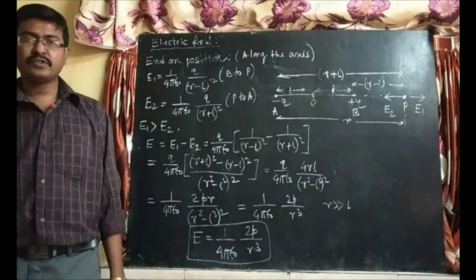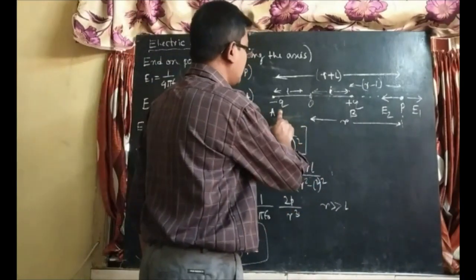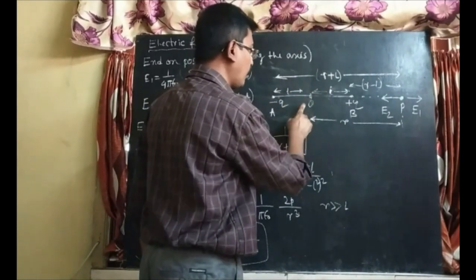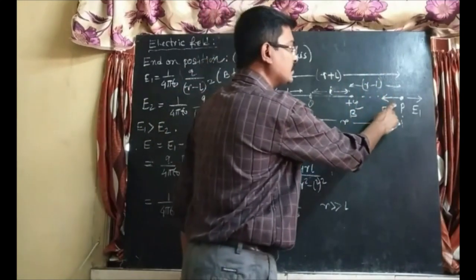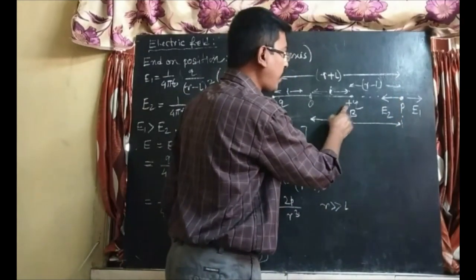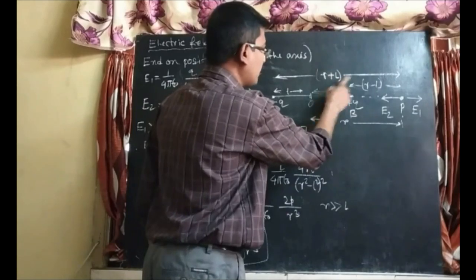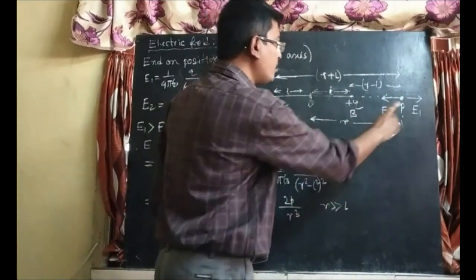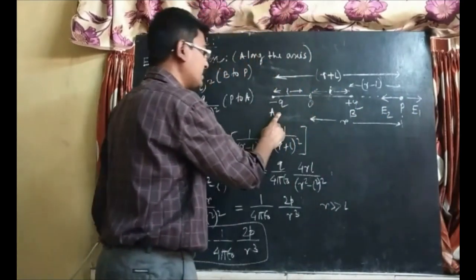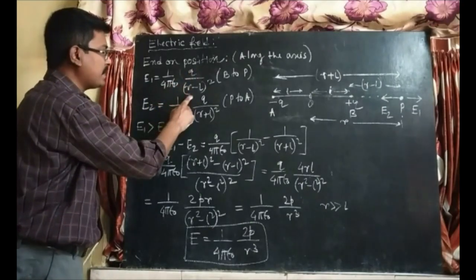Now we will find out the electric field strength at any point P due to the electric dipole. Suppose this is the electric dipole with minus Q and plus Q, separated by distance 2L. O is the midpoint. We have to find the electric field strength at point P. The distance from plus Q to P is R minus L, and from minus Q to P is R plus L. E1 is the electric field due to plus Q, and E2 is the electric field due to minus Q. E1 equals 1 over 4π ε₀ times Q over (R minus L) squared.